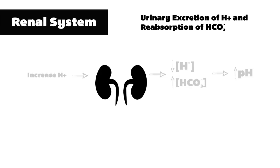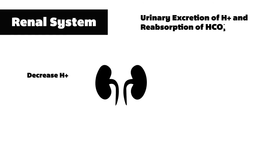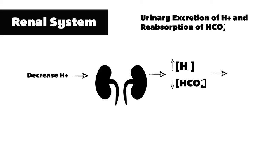The opposite happens when the kidneys sense a decrease in hydrogen ion concentrations. In this situation, the kidneys will excrete less hydrogen ion and reabsorb less bicarb, all leading to a lower pH.